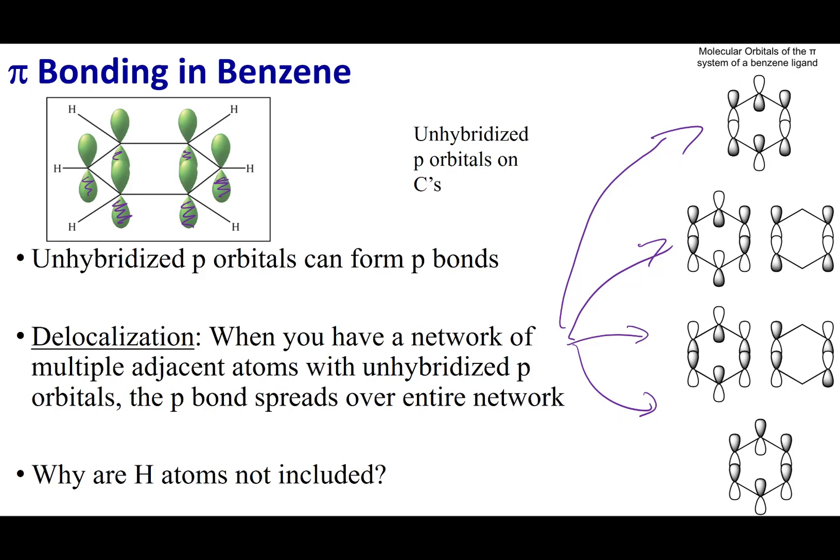When you have resonance structures, what you're showing are electrons that are moving around the molecule. These are called delocalized electrons. Delocalized electrons are best described using MO theory.